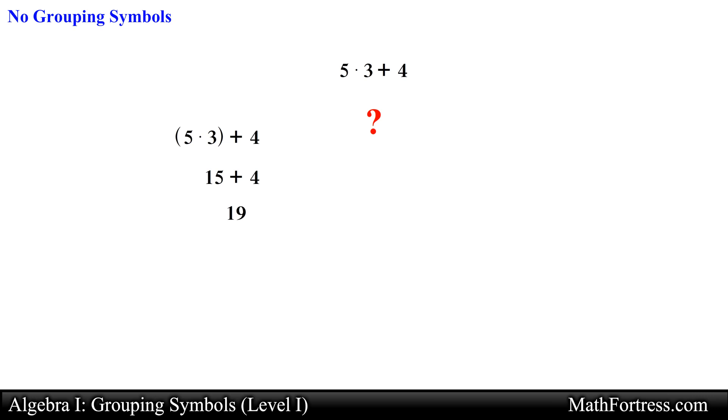A second student might want to group 3 and 4, and add them first, then multiply the result by 5, to obtain an answer of 35. Hmm, who is correct?